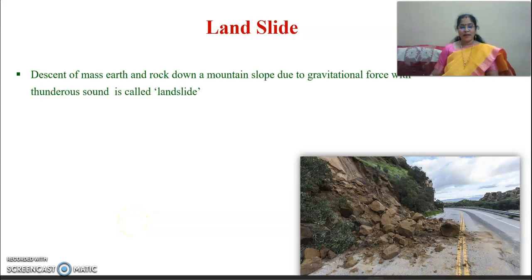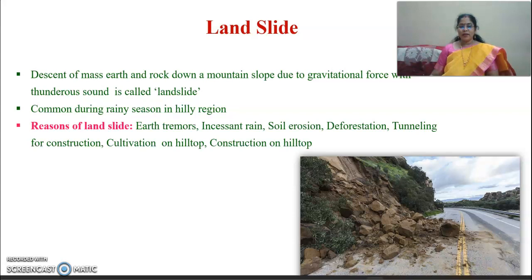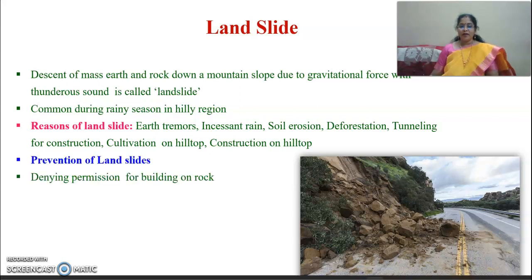Let's now learn what is a landslide. A descent of mass of earth and rock down a mountain slope due to gravitational force with a thunderous sound is called a landslide. It is common during the rainy season in hilly regions. The reasons for landslide are earth tremors, incessant rain, soil erosion, deforestation, channeling for construction, and cultivation or construction on hilltops.